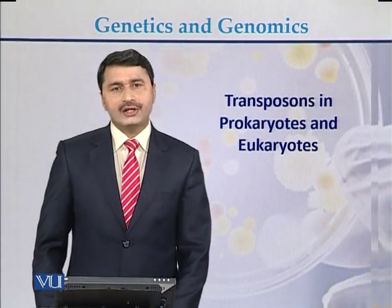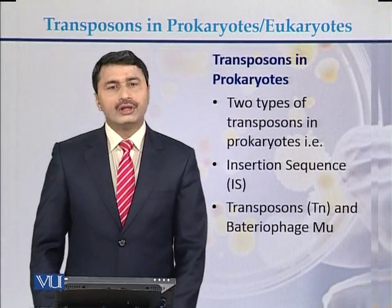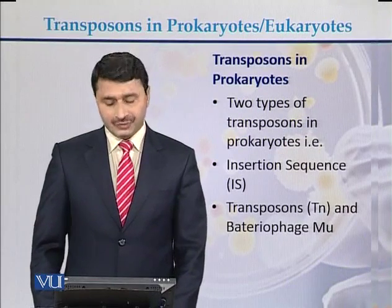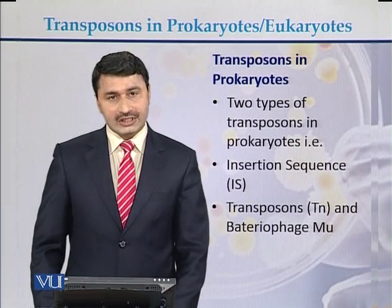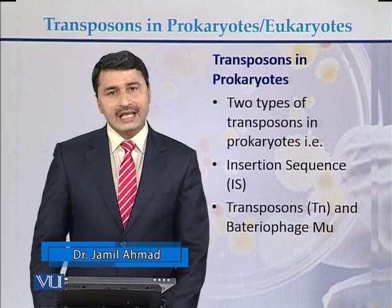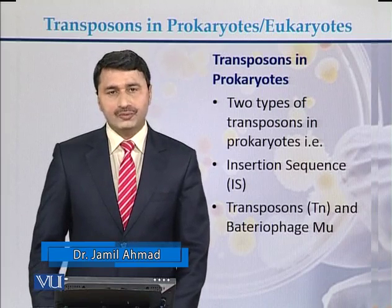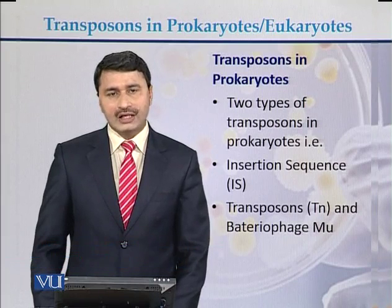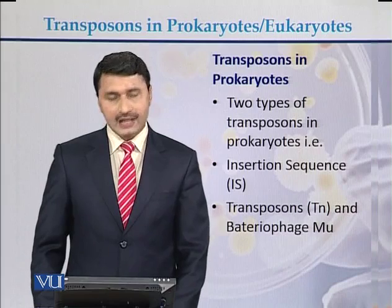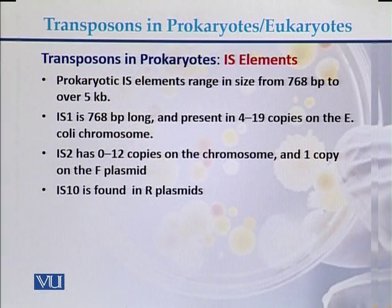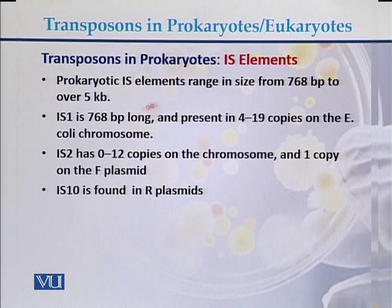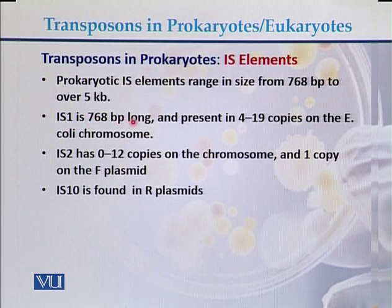This lecture covers transposons in prokaryotes and eukaryotes. In prokaryotes, there are two types of transposons: insertion sequences (IS elements) and transposons like Tn and bacteriophage Mu. IS elements are prokaryotic elements that range in size from 768 base pairs up to 5 kb. For example, IS1 is 768 base pairs long.